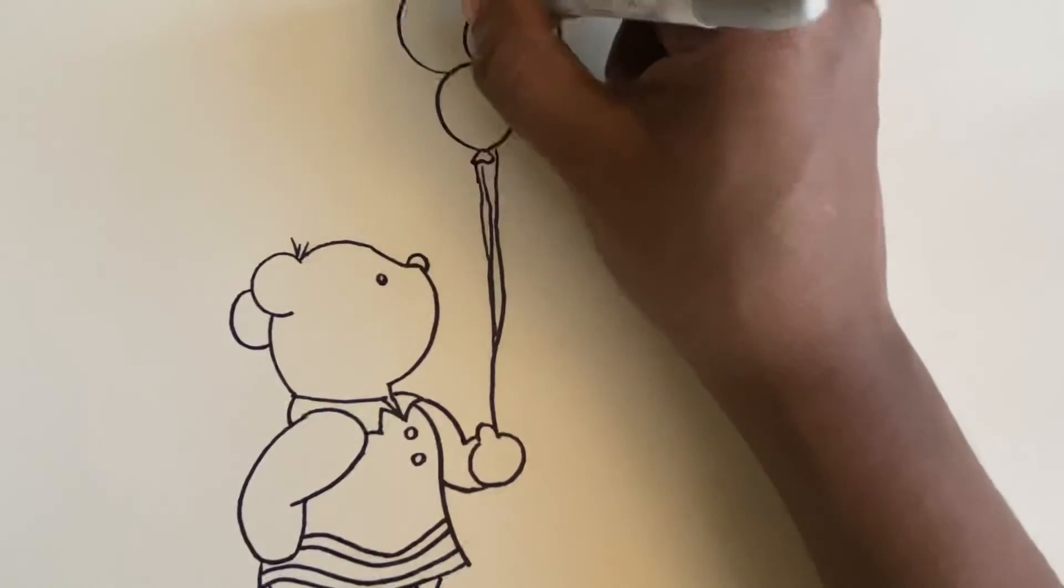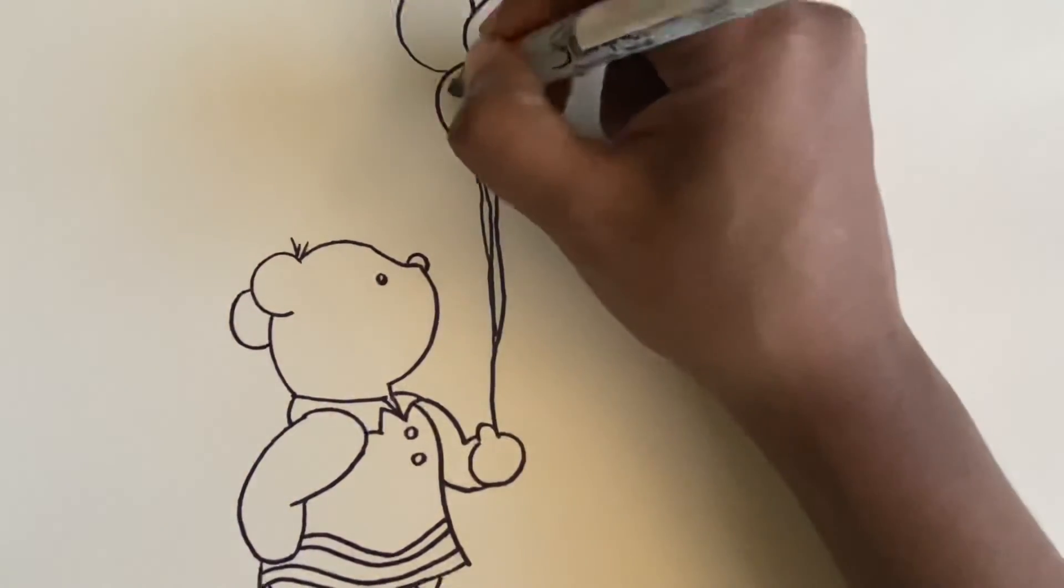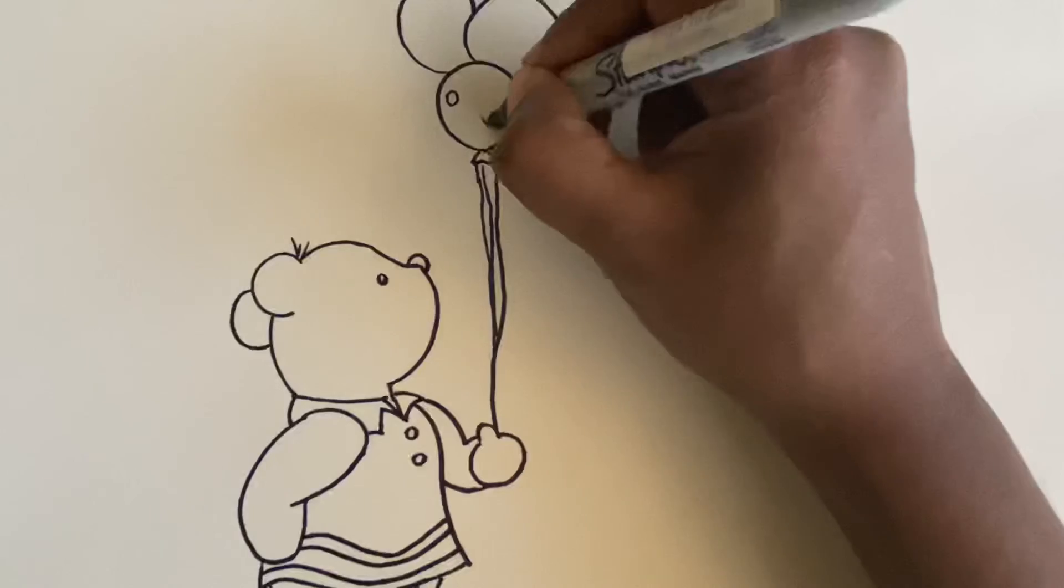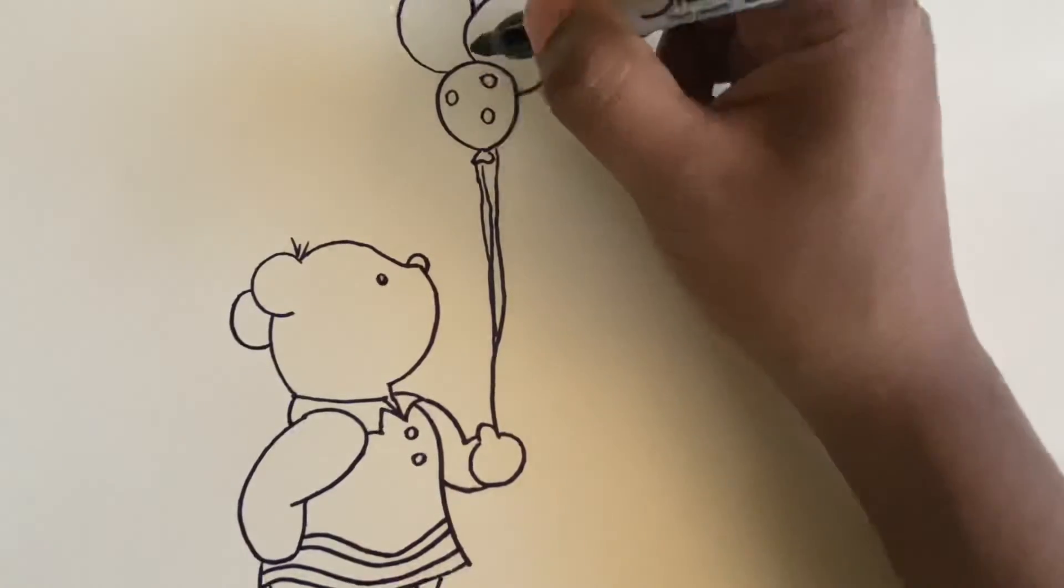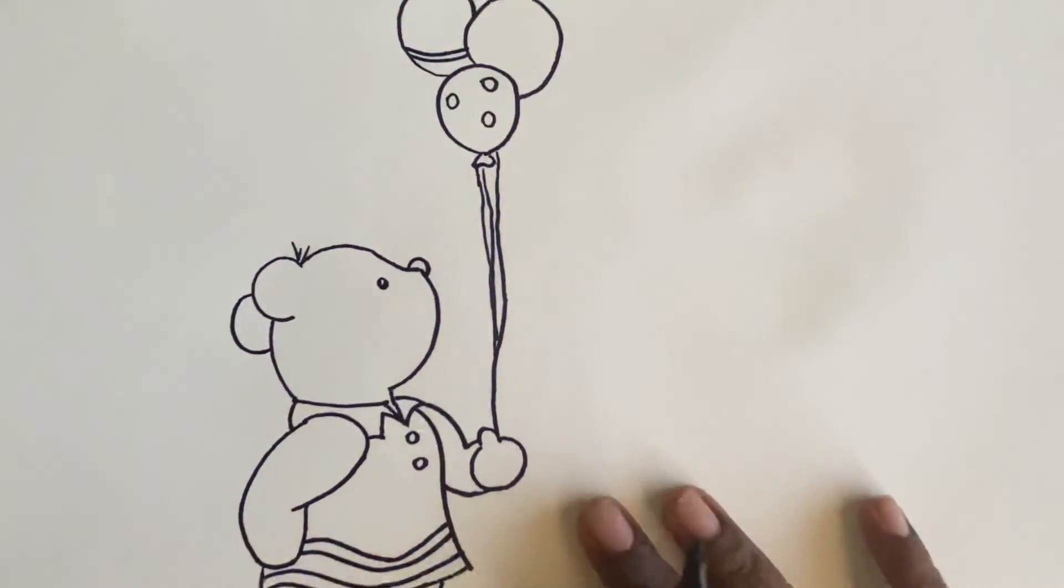And then one last oval right above that, and that's done. Again, you guys can get creative with the designs on the balloon. I just made some stripes, polka dots, and dots, so it's up to you guys.